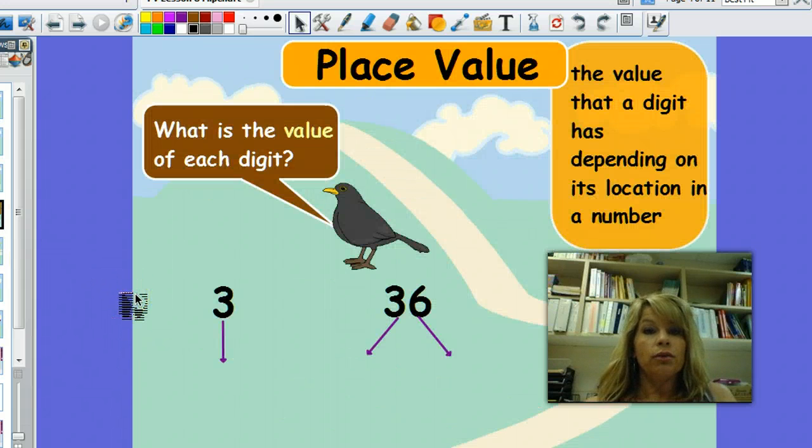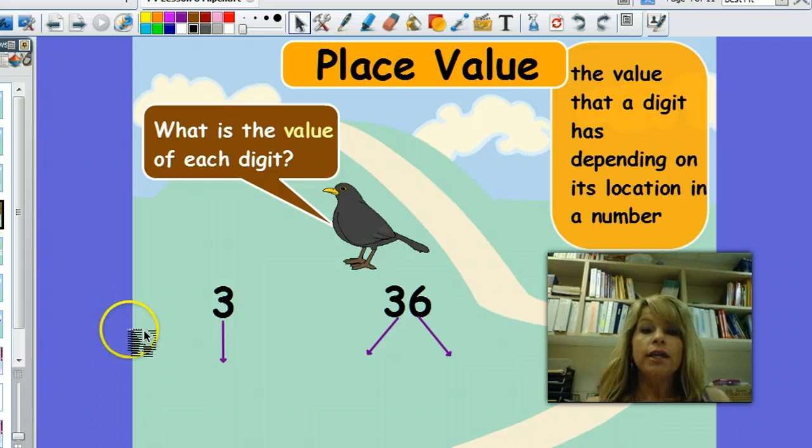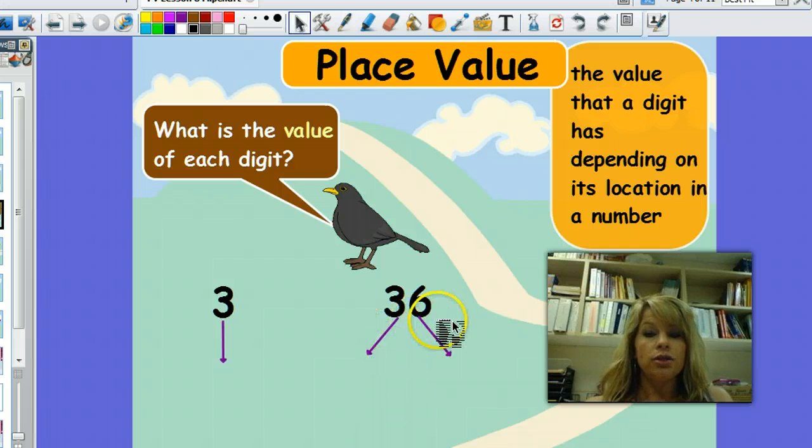When looking at place value, we are looking at the value of each digit in a number. This is a one-digit number. Here's a two-digit number, 36, and a three-digit number, 316.